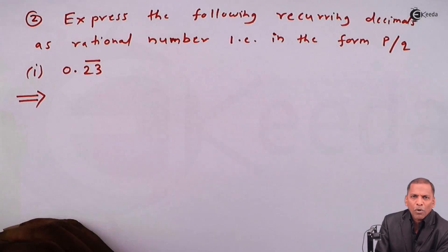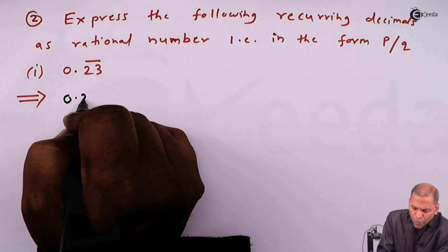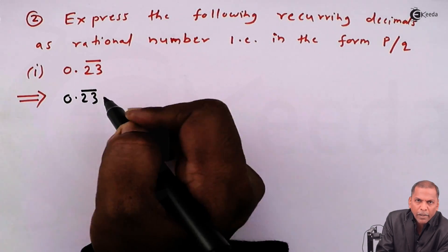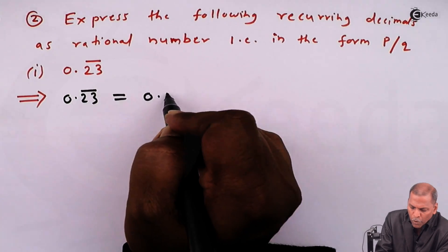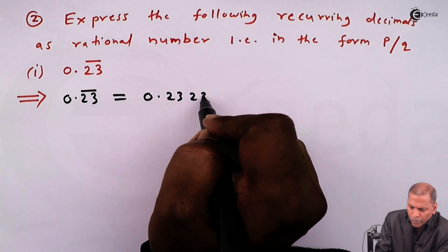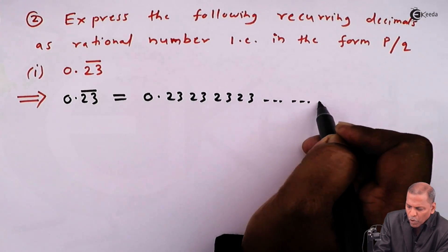Let's see the solution. The solution is very simple. First of all, 0.23 bar can be written as 0.2323232323 going on.